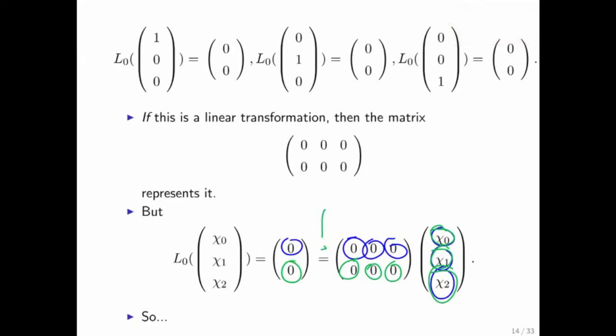Therefore, what we know is that L0 is a linear transformation and that the zero matrix, which is what we're going to call this matrix, is indeed the matrix that represents it.